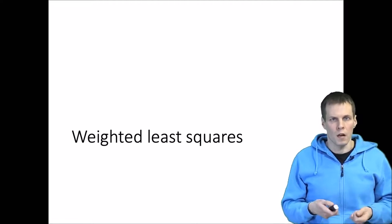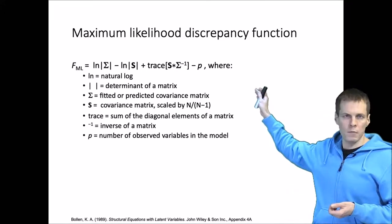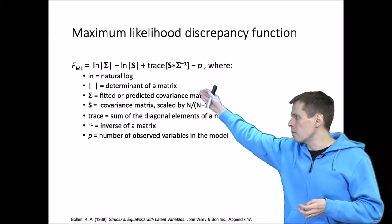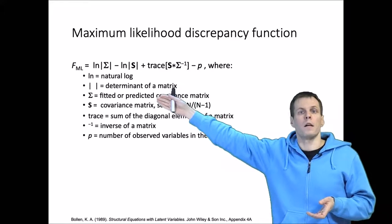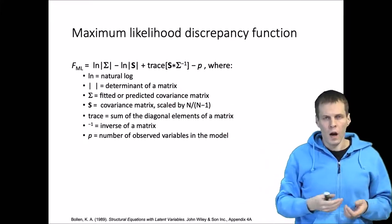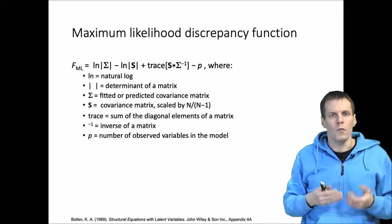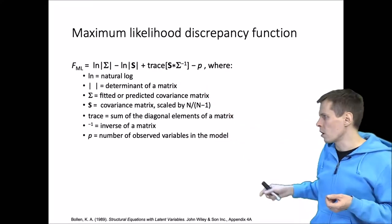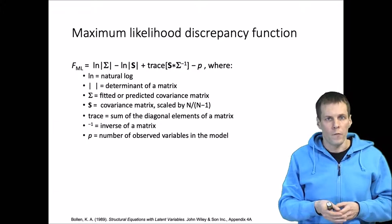Let's take a look at the idea behind these alternative estimation techniques. This is the equation for maximum likelihood estimation. The idea in MLE is that we try to minimize the difference between the model-implied correlations sigma and the actual observed correlations or covariances in the data S — this is the discrepancy function. Understanding where that comes from is not particularly useful for an applied researcher, but if you want to know how it is derived you can look at, for example, Wallen's book appendix 4a, which derives this equation starting from the multivariate normal distribution.